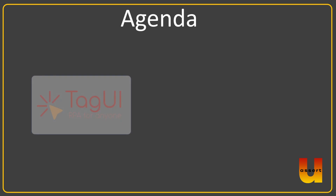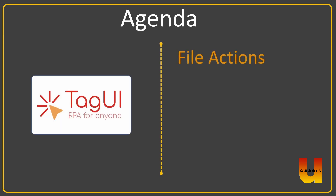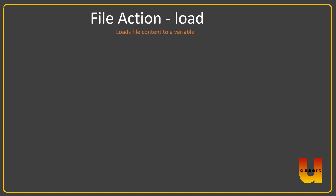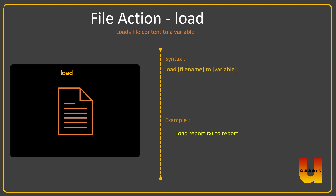Hello everyone, welcome to today's session. In this session we are going to see file actions — specifically the load action. Load loads a file's content into a variable. We have seen examples in the past related to file actions like dump and write, which create a file or write content to a file. Load does the reverse: it takes the content of the file and loads it into a variable. You provide the file name and the variable name.